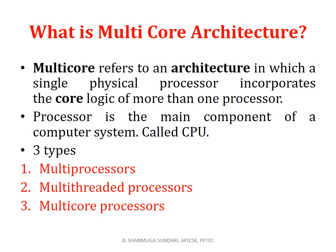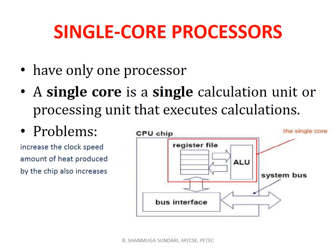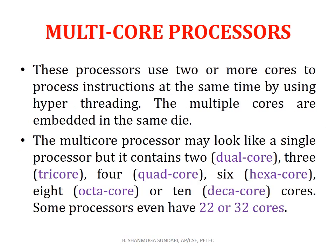There are three types: multi-processor, multi-threaded processor, and multi-core processor. In single core processor architecture, there is only one processor that performs a single calculation or processing unit. The problem is that it increases the clock speed, and the amount of heat produced within the chip also increases.